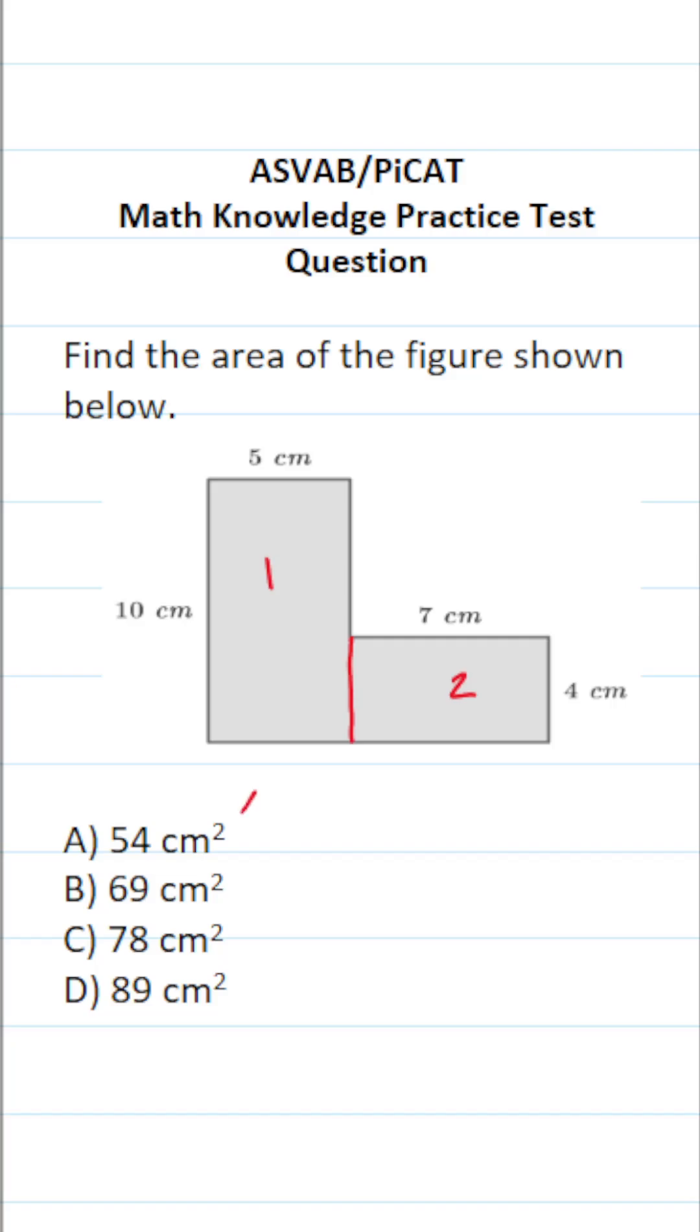To find the area of the composite figure, we're going to find the area of the first rectangle and add that to the area of the second rectangle.